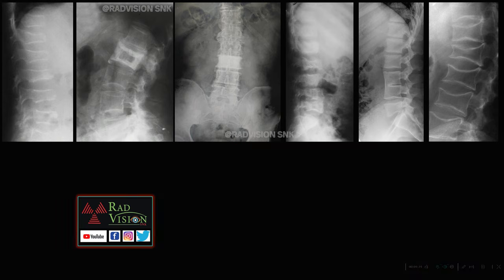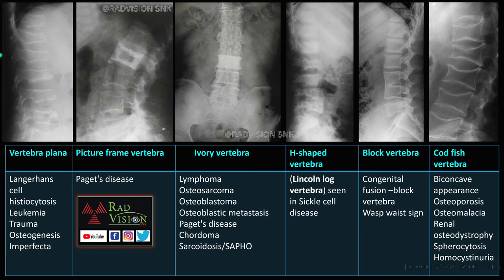Picture frame vertebra shows sclerosis around the corners of the vertebra, classically seen in Paget's disease. Diffuse sclerosis of a single vertebra is described as ivory vertebra, seen in lymphoma, osteosarcoma, osteoblastoma, osteoblastic metastasis, Paget's disease, and chordoma.